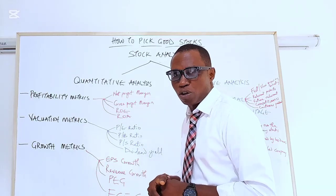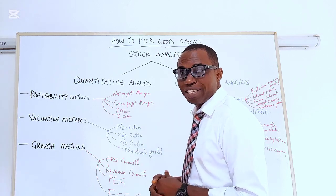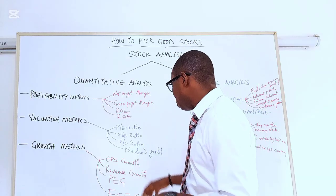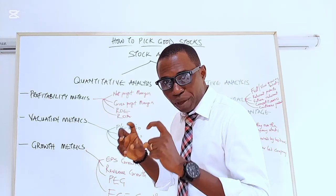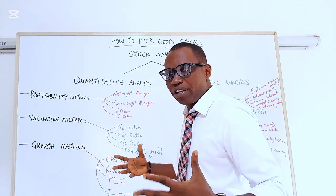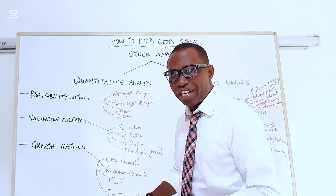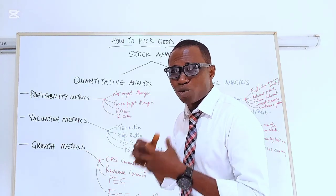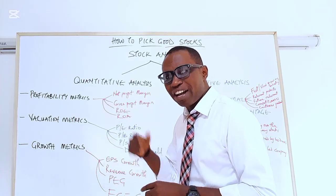The next valuation metric is the PB ratio — the price-to-book ratio — where you compare book value to price. Then there is the PS ratio — the price-to-sales ratio — where 'price' refers to the market price. Finally, there is dividend yield, especially if you are looking for dividend-paying stocks. Also look at dividend growth over time and dividend history, as this tells you whether the company can keep paying dividends into the foreseeable future. In US stocks, some companies have been paying dividends consistently for over 20 to 30 years.